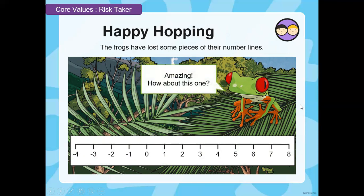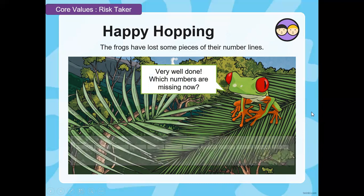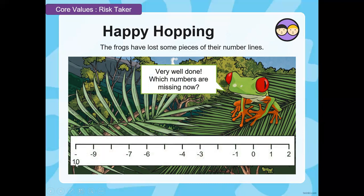Well done — you've done it amazingly! You know that zero was missing. Let's try another one. There are three positive integers missing and one negative integer is missing. It's going from minus 1, minus 2, minus 3 — what could the last number be? Give it a go and then check your answer. Well done! Let's have another go — this one goes to minus 10 or negative 10. Pause the video here and try to work out the missing numbers.